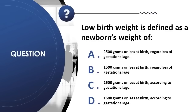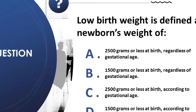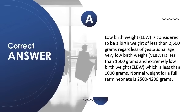Question 1: Low birth weight is defined as a newborn's weight of: A) 2500 grams or less at birth, regardless of gestational age; B) 1500 grams or less at birth, regardless of gestational age; C) 2500 grams or less according to gestational age; D) 1500 grams or less according to gestational age. Correct answer is A. Low birth weight is less than 2500 grams regardless of gestational age. Very low birth weight is less than 1500 grams; extremely low birth weight is less than 1000 grams. Normal weight for a full-term neonate is 2500 to 4200 grams.